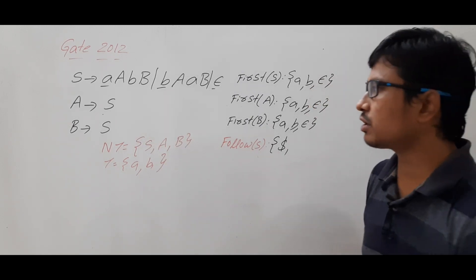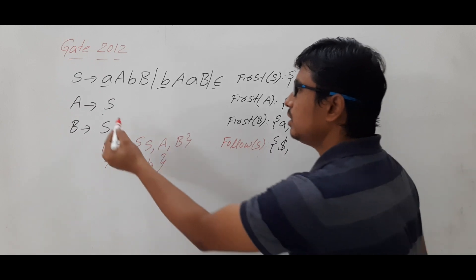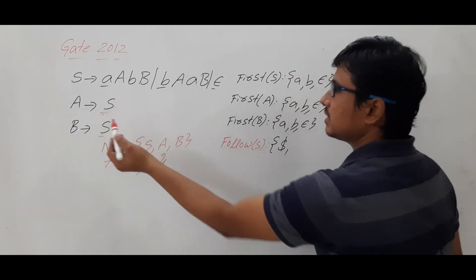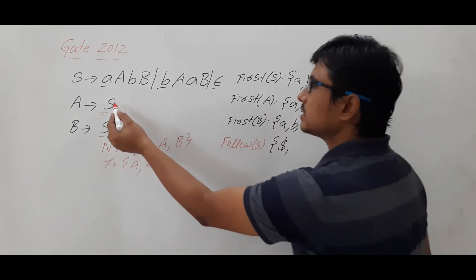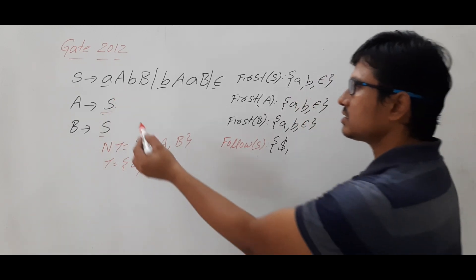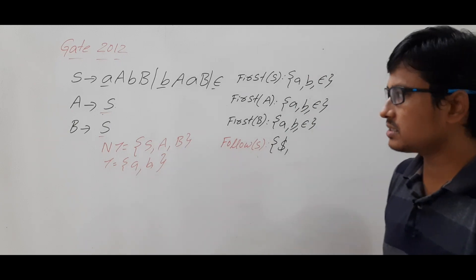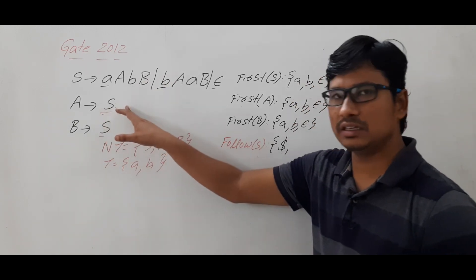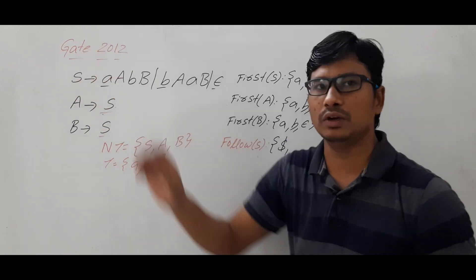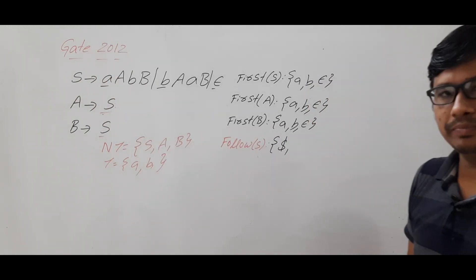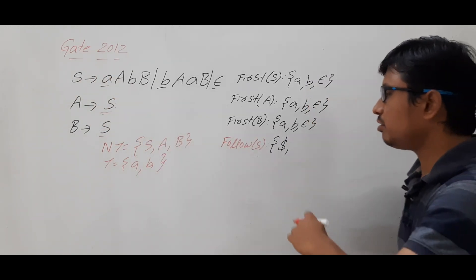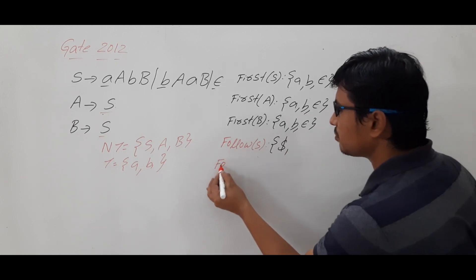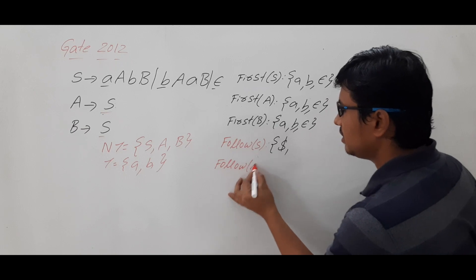Whenever you are computing the FOLLOW of anything, you need to look at where it appears in the right-hand side of the production. Here S appears in one production, and in another. In the first case, after S nothing is there, so FOLLOW of S is equal to FOLLOW of A. So let me compute FOLLOW of A first, then I can easily write it in the FOLLOW of S.